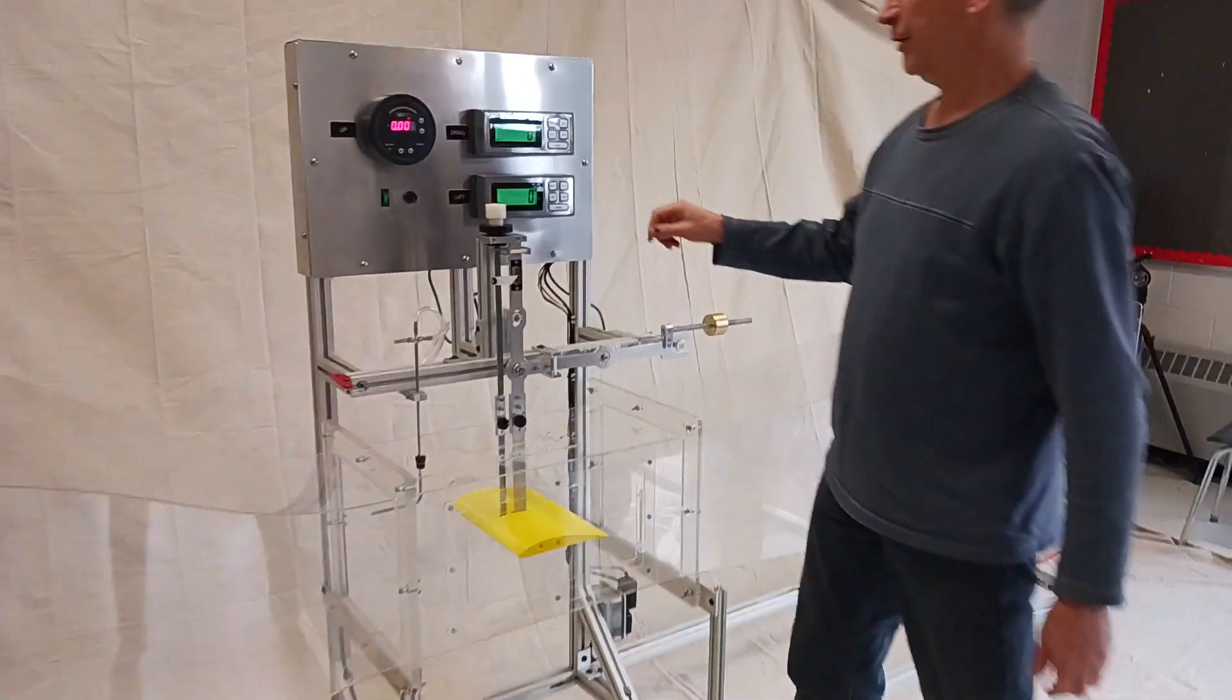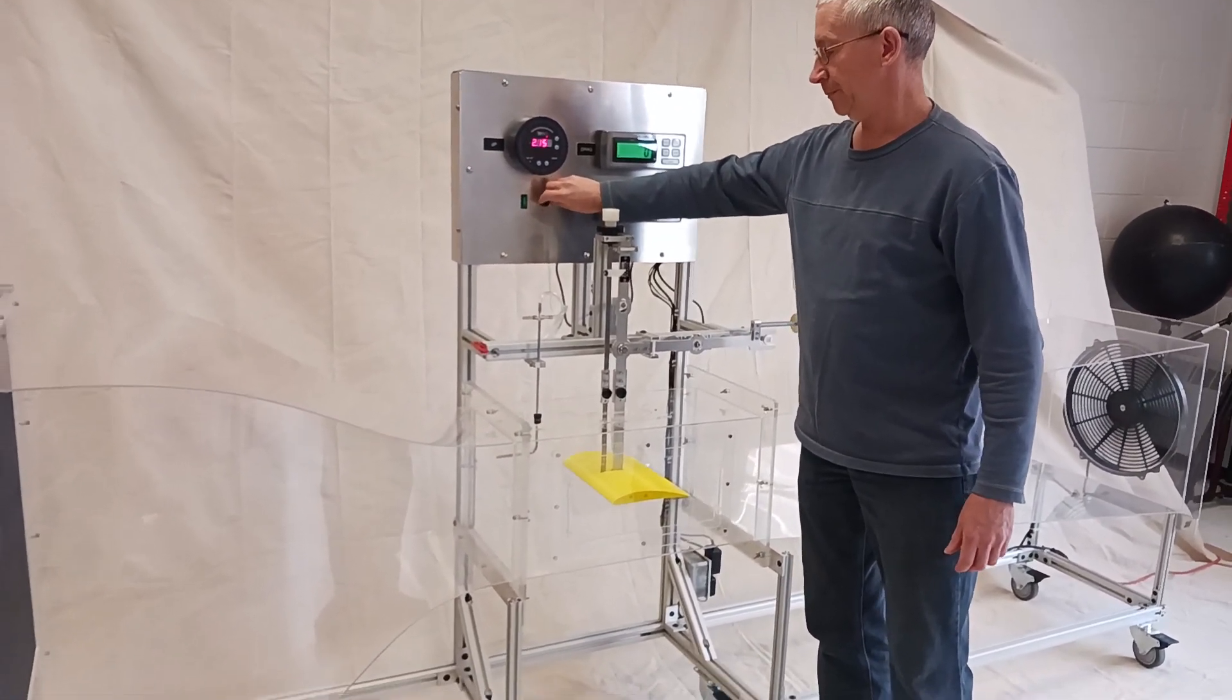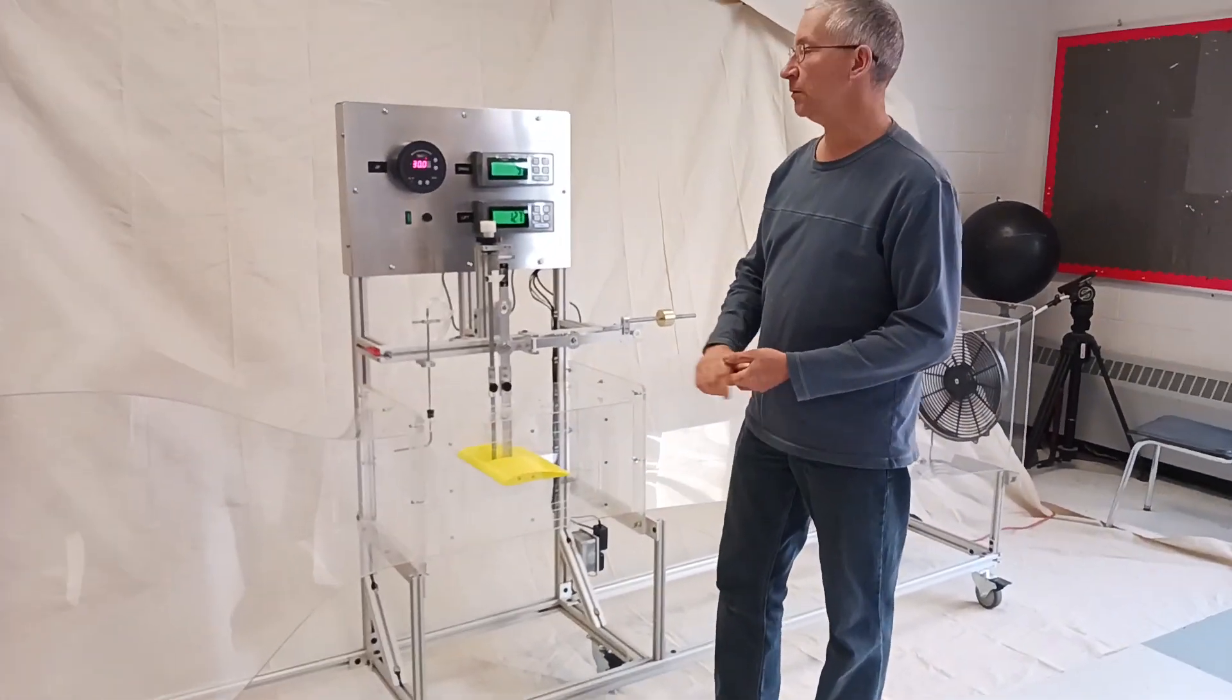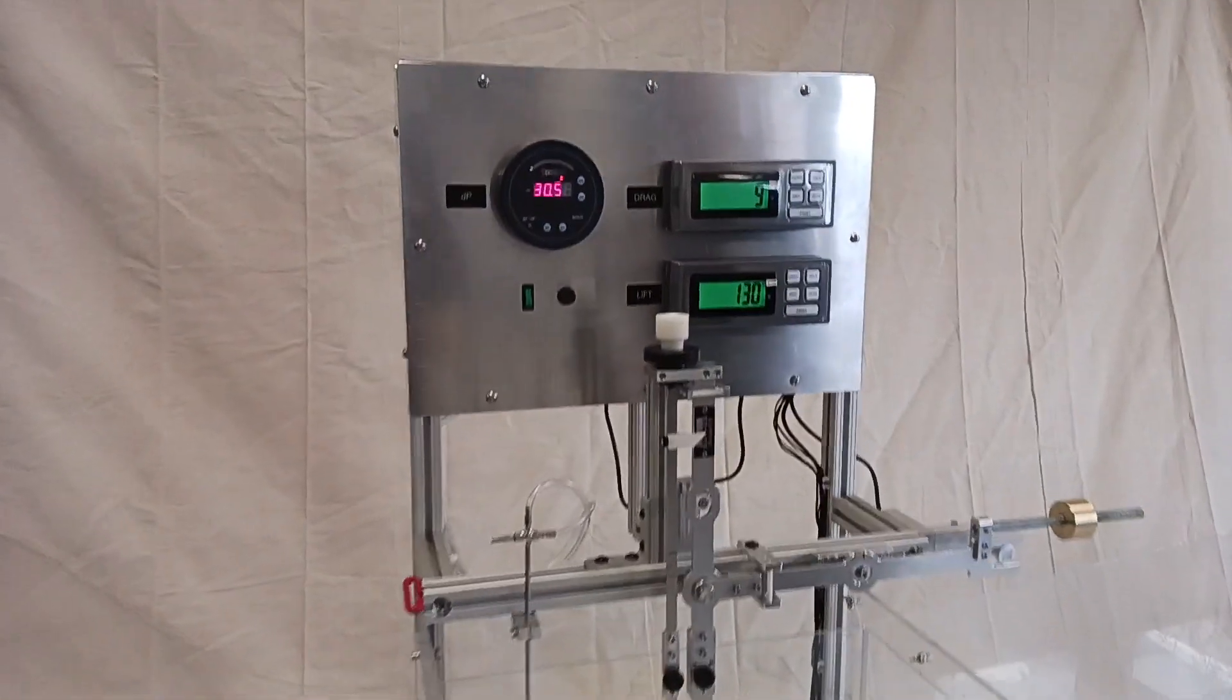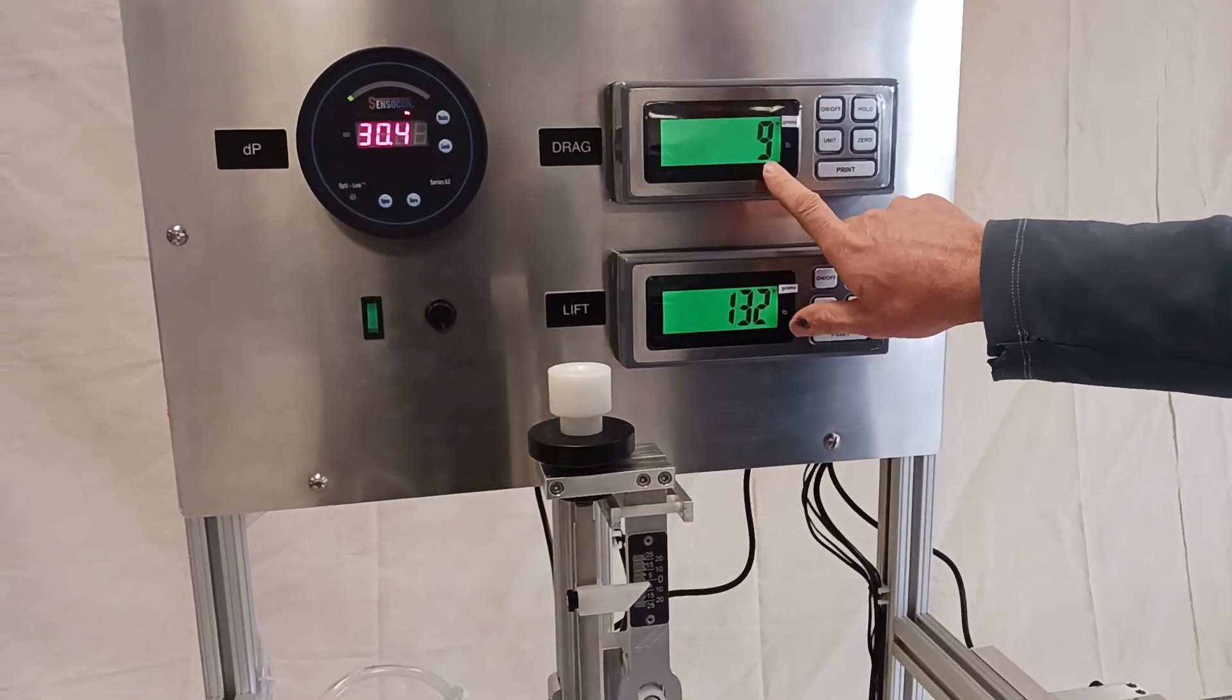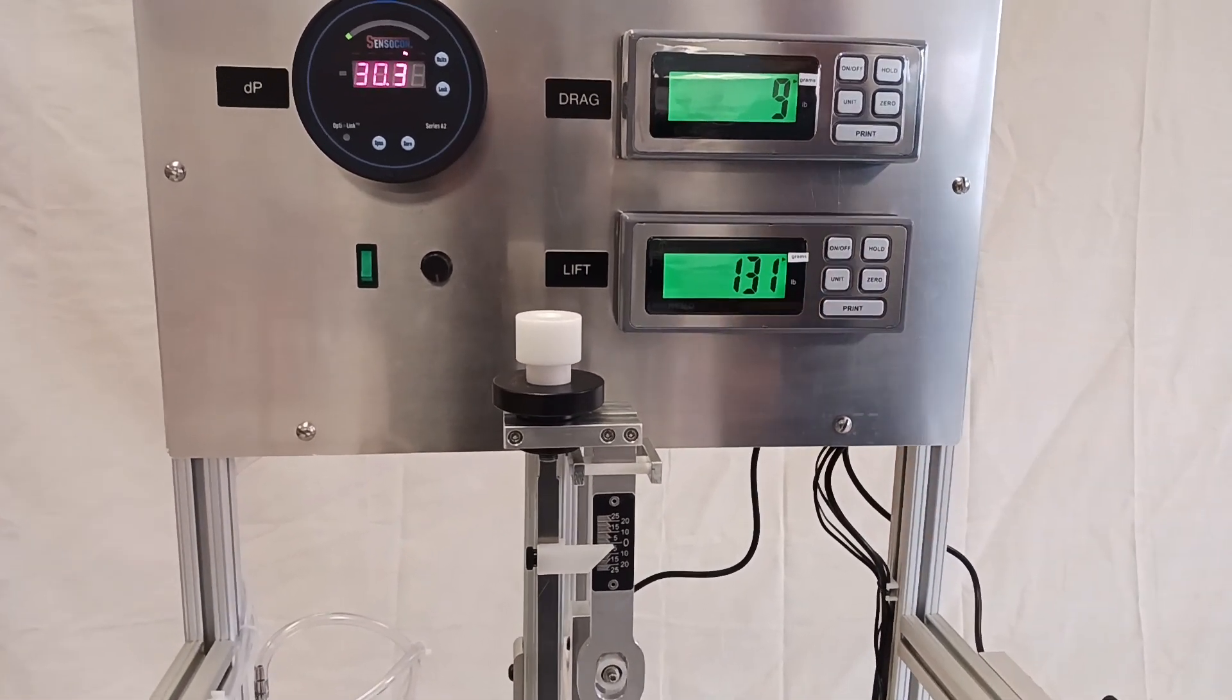So enough talk. Let's turn it on. So there's an on-off switch here. And then there's a control of the fan. So I have the system on full. And it's telling us the delta pressure in pascals is 30. You can convert that to velocity. And right now at zero angle of attack, it's saying that the drag is nine grams and that the lift is currently 131 grams.